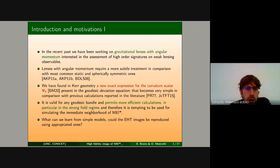To begin with, let me put the work in context and mention a few motivations. Not long ago we have been interested in working on gravitational lenses with angular momentum. Lenses with angular momentum require a more stable treatment to companion with more static and spherically symmetric cases, such as Schwarzschild geometry. While working in Kerr geometry, quite fortunately we have found a new exact expression for the curvature scalar C0, one of the bi-curvature scalars that is present in the geodesic deviation equation.